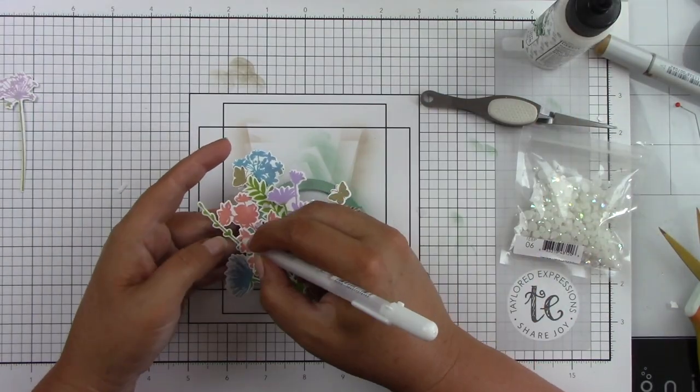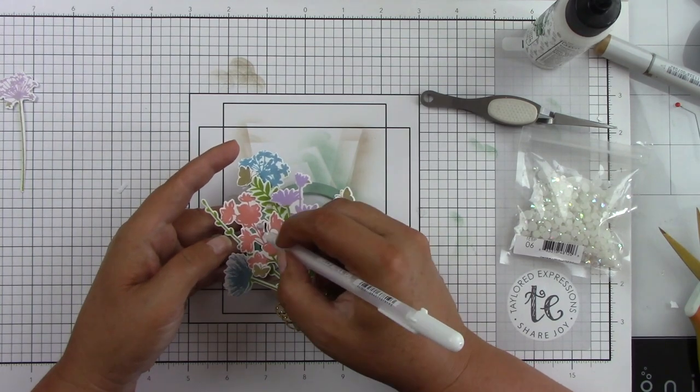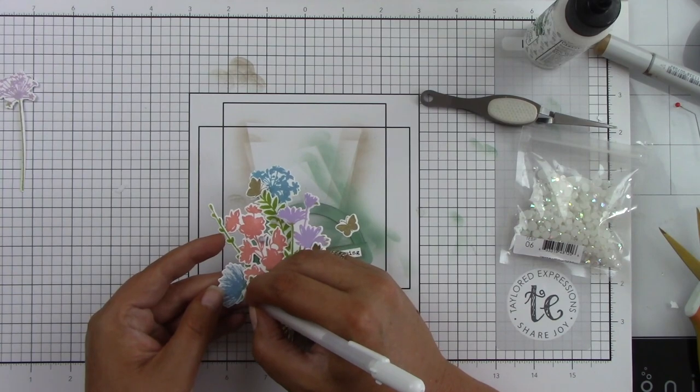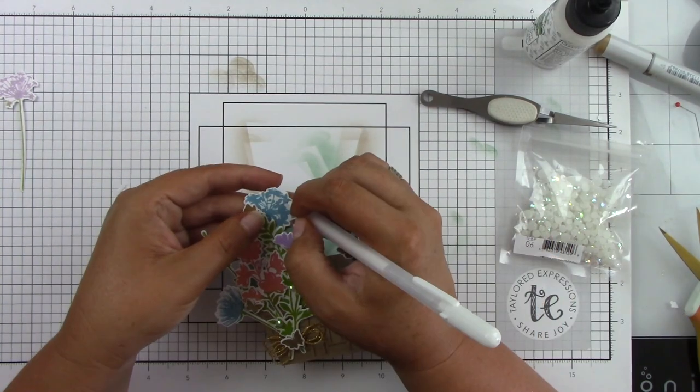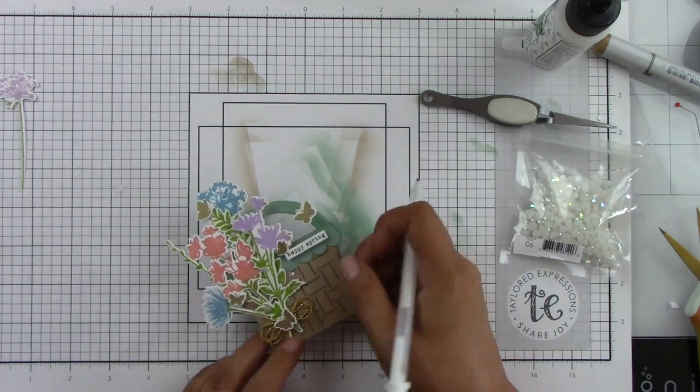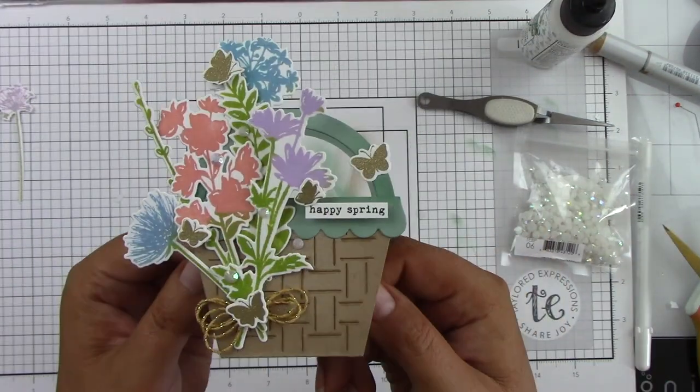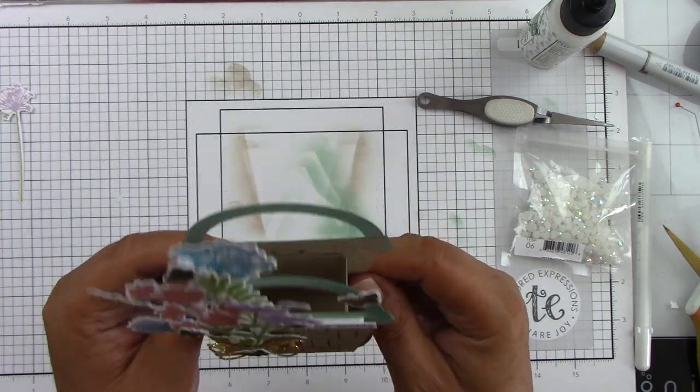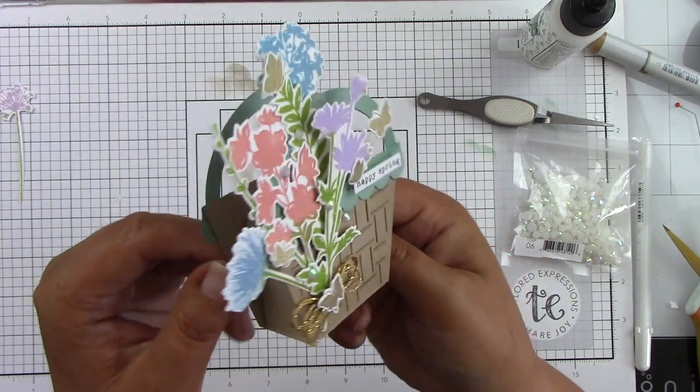Then I'm using some white gel pen to add some highlights to these flowers, some little highlights, some little dots. And then this cute little treat basket is finished, and it is so darling. And like I said, you could just make a ton of these. You don't even have to add the flowers. You could just make a bunch of these to hold some really cute little treats.